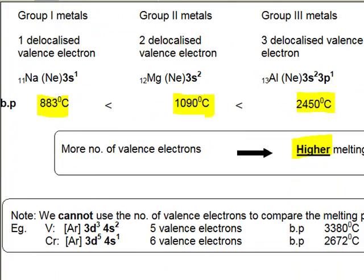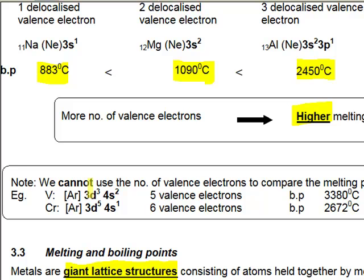However, please take note that we cannot use the number of valence electrons to compare melting point of transition metals because transition metals are having a high number of valence electrons. And towards the end, it might not be so feasible to remove all of them.